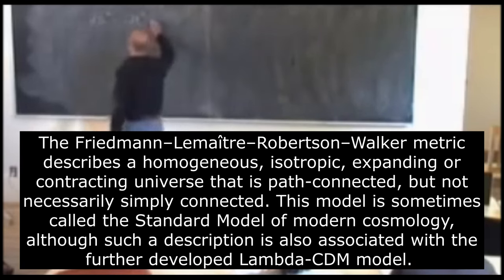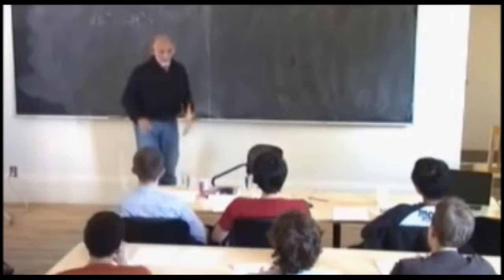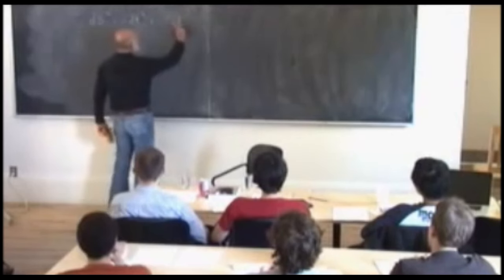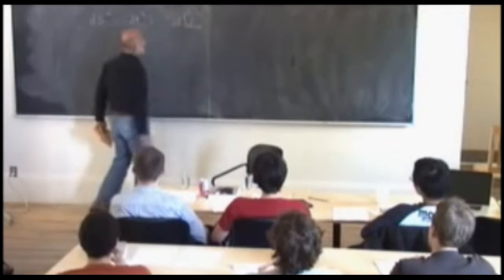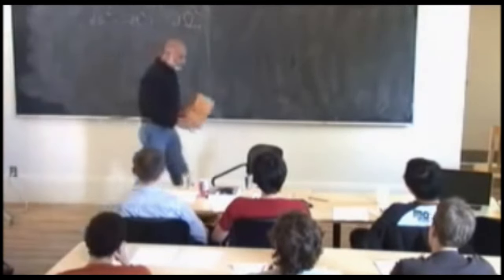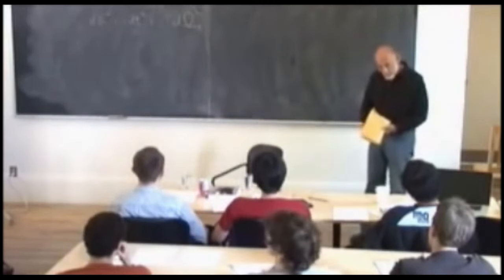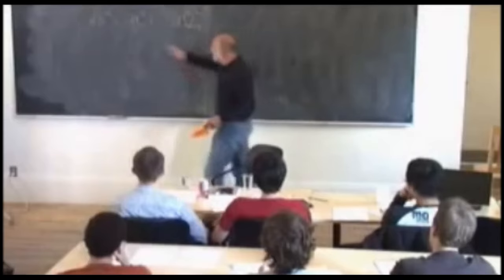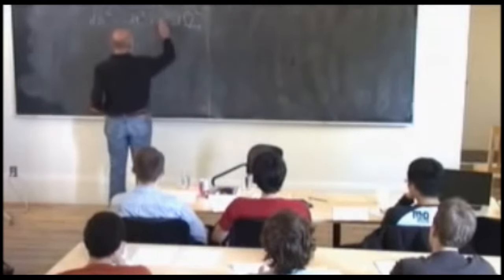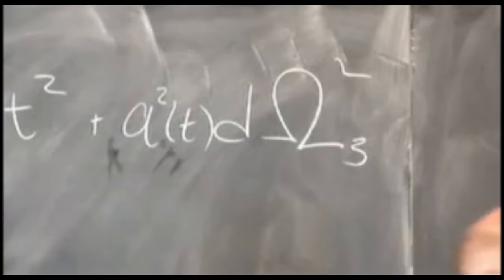In an FRW universe, we can imagine that space is itself not flat but positively curved — let's say a three-sphere. That means we add a three-sphere metric into here. The metric for a three-sphere just stands for the unit three-sphere, meaning the three-sphere of unit radius. But in cosmology, the radius of the universe is not expected to remain constant; it's expected to be a function of time, so there's something called a scale factor.